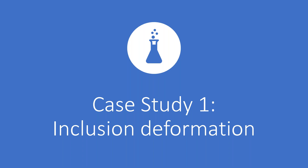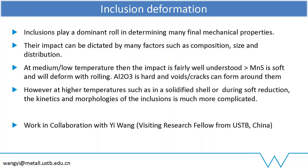Most of you are here to listen about the Glebal, so I'm going to give you a couple of individual case studies. The first one starts at as high a temperature as we go — looking at inclusion deformation. Most of us know that inclusions play a really dominant role in final mechanical properties. Their impact is dictated by things like their composition, size, and distribution. At medium to low temperatures, they're fairly well understood: manganese sulfide is soft and deforms during rolling; aluminium oxide is not soft and we see cracking and voiding. But what role do they play at higher up in the process — during the solidified shell and any soft reduction? Does that impact hot shortness? This work was done in collaboration with USTB, particularly Yi Wang, who visited us for six months.